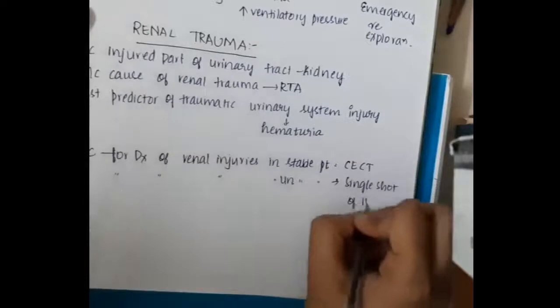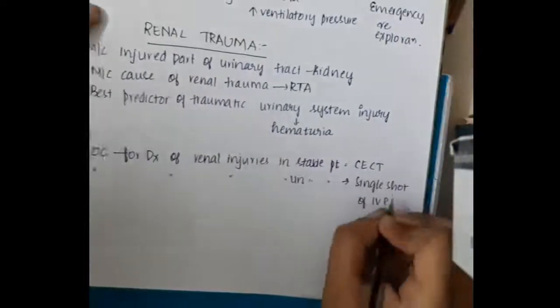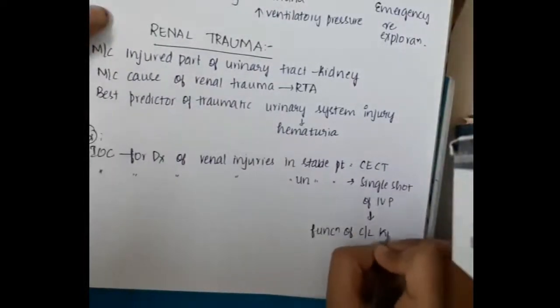Investigation of choice for diagnosis of renal injury in an unstable patient is by giving single intravenous shot of IVP. This single shot of intravenous pyelogram will tell us about the functioning of contralateral kidney also.